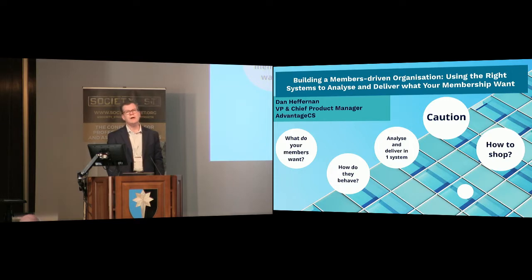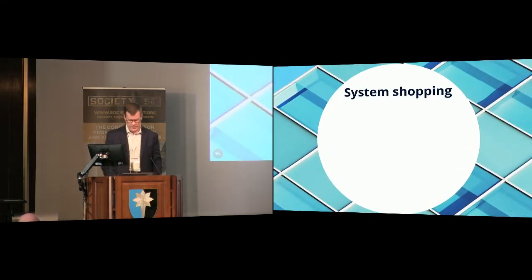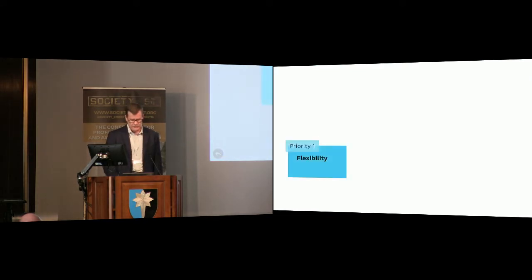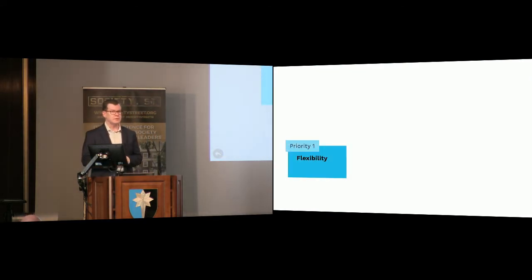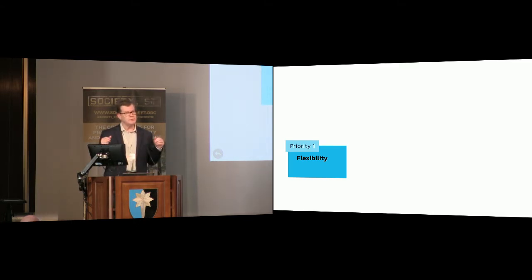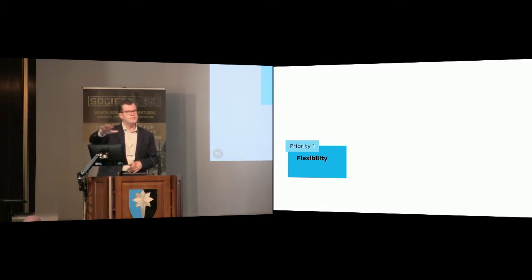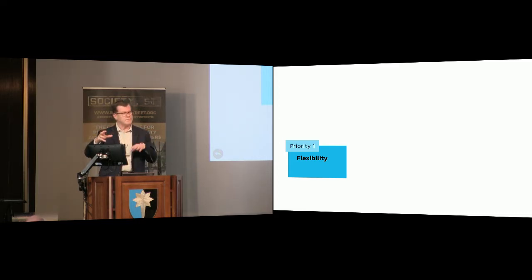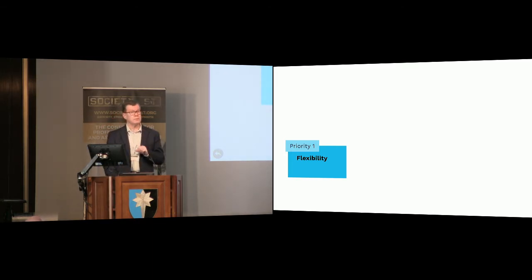So how to shop — how to find a system that does everything you need. First priority is flexibility. When looking for a membership or subscription system, you need it to be flexible because you have no idea what your pricing model may be in five years' time. You want a system that's future-proofed, architected in such a way that can be easily changed and adapted to a very quickly changing world as your membership benefits and levels evolve over time.